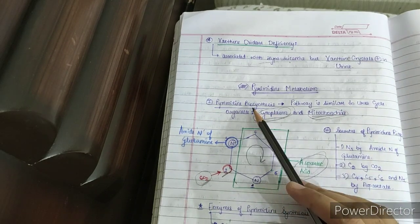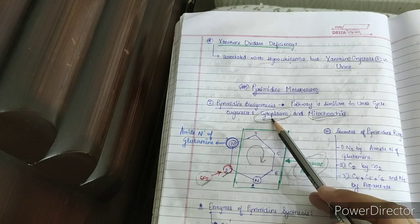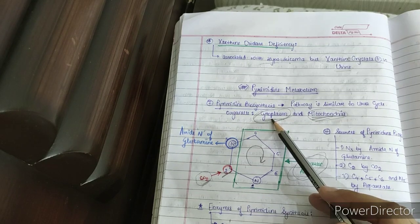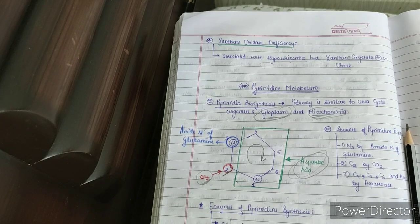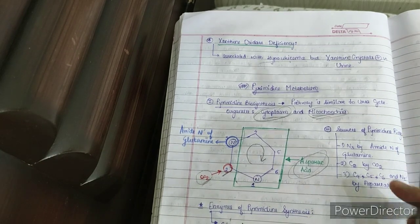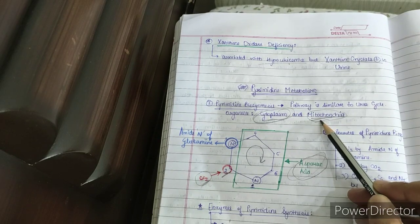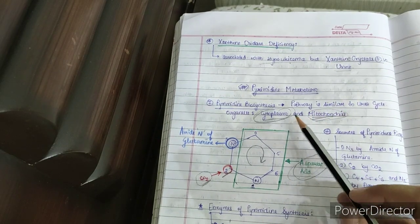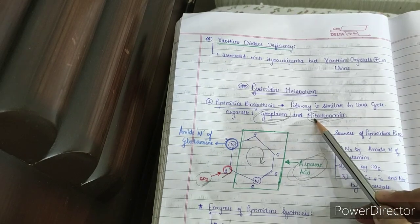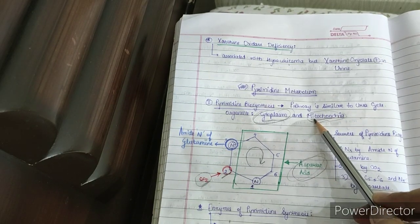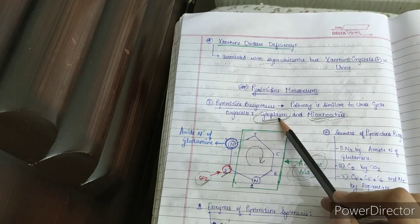Regarding the organelles involved in pyrimidine biosynthesis, the majority of enzymes are cytosolic enzymes. However, there is only one enzyme present in the mitochondria — dihydroorotate dehydrogenase. The reaction catalyzed by this enzyme occurs only in the mitochondria; the rest of the reactions are cytoplasmic.